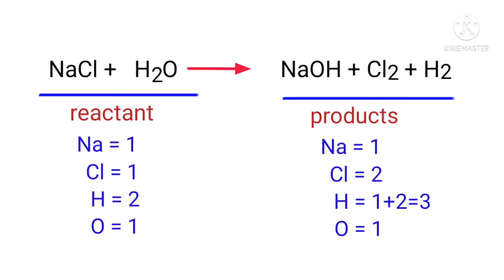If you look at this equation, the equation is not balanced. In the reactants side there are one sodium atom, one chlorine atom, two hydrogen atoms, and one oxygen atom present. And the products side there are one sodium atom, two chlorine atoms, three hydrogen atoms, and one oxygen atom present.